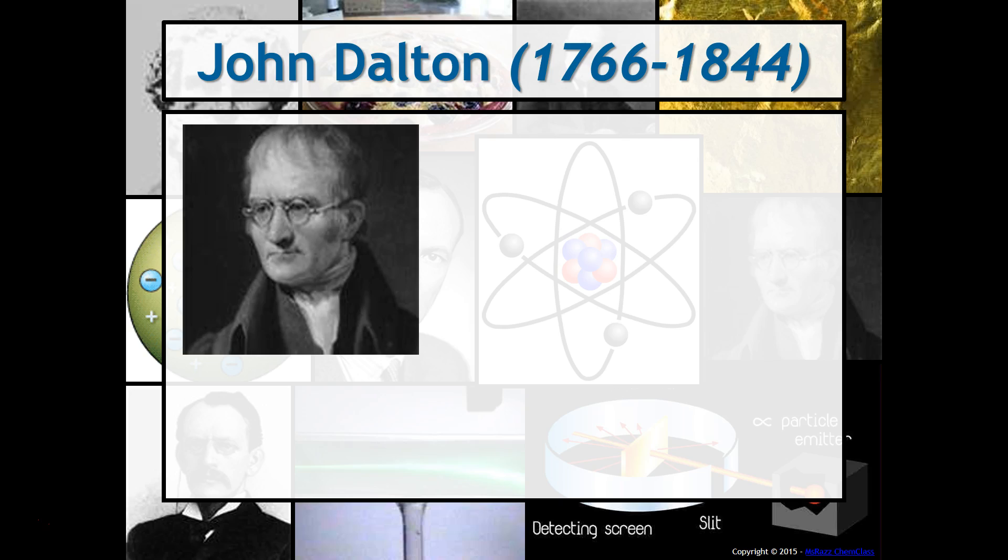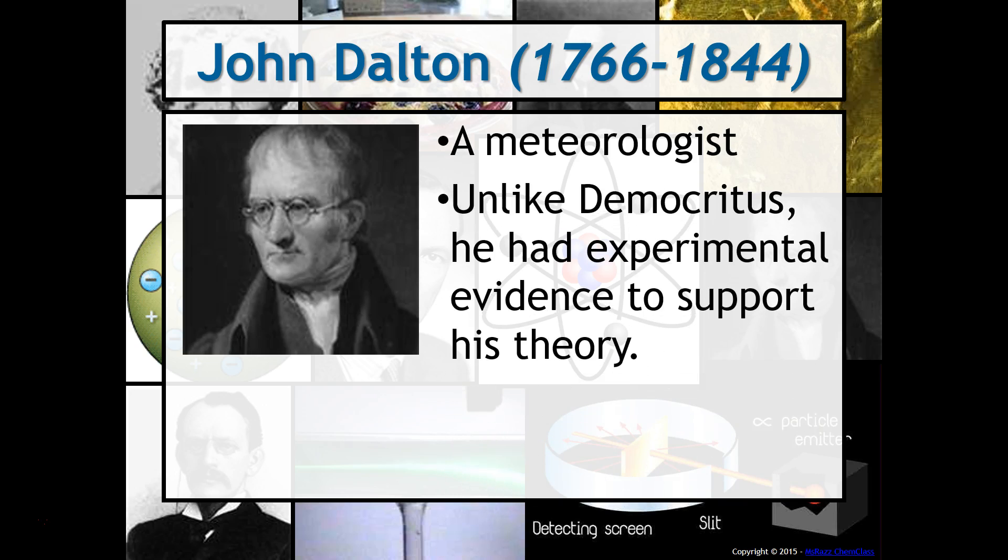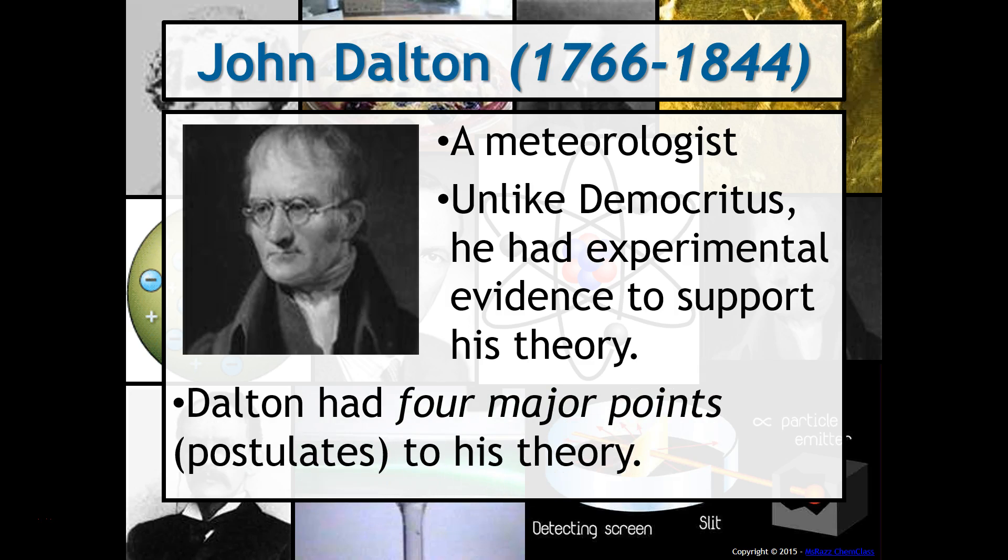John Dalton on the other hand was a little bit more respected, and notice the large time lapse in between. John Dalton was a meteorologist. The main thing that separated him from Democritus was that he had experimental evidence to support his theory. His theory had four major points or what we call postulates.